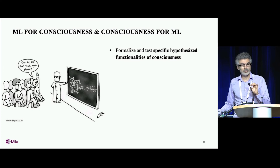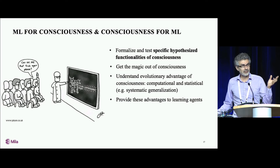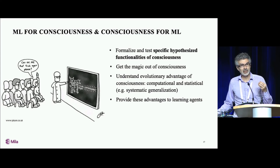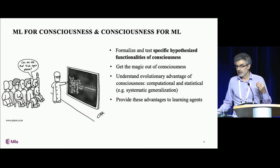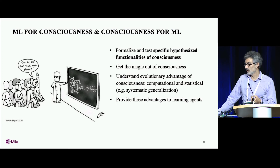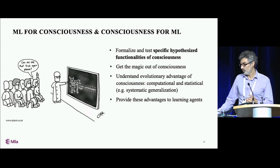For me at least, one of the motivations is also to get rid of the fuzziness and magic that surrounds the word consciousness. I think machine learning is in a good position to provide a justification for these particular forms of computations — why have they evolved, and what kind of computational and statistical advantages come with them? And of course, once we understand these things, we also want them in our learning agents.